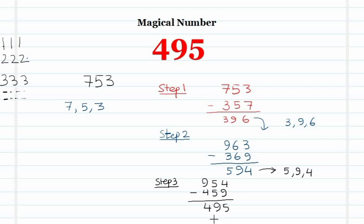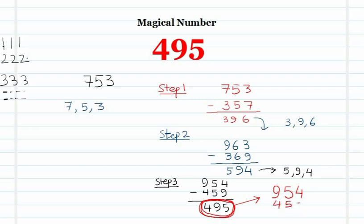Now from 495, can it proceed any further? Let's check. The digits of 495 are 4, 9, and 5. The largest number is 954, the smallest is 459, and their difference is again 495. This procedure never ends — once you reach 495, you stay at 495.